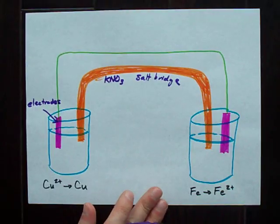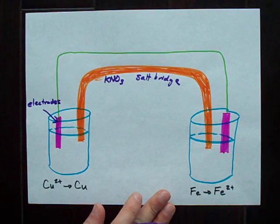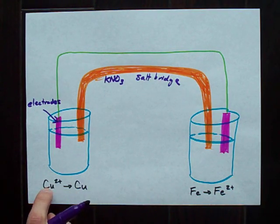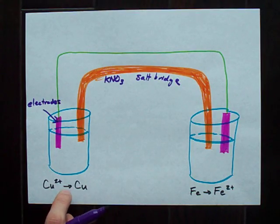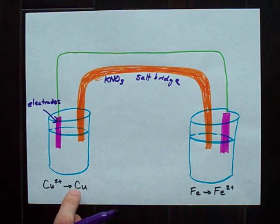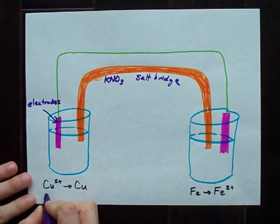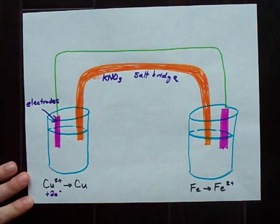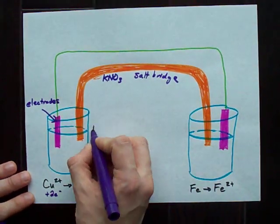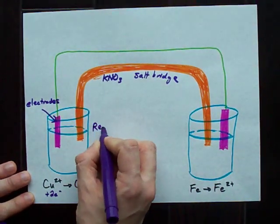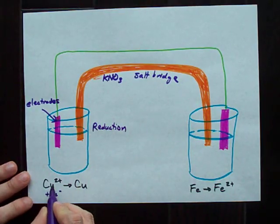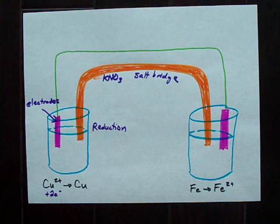What's actually happening in each beaker? The way that I've set this up, I've got copper 2 becoming copper. That copper 2 is gaining electrons, so this side represents a reduction. Reduction is a gain of electrons.